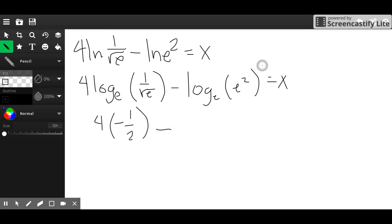Then subtract. I ask myself, e raised to what is e squared? 2. So minus 2. Then I just multiply 4 times negative 1 half. It's negative 2, subtract 2. Negative 4 is equal to x.